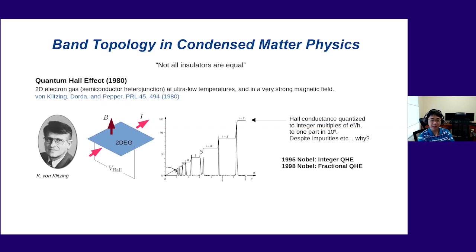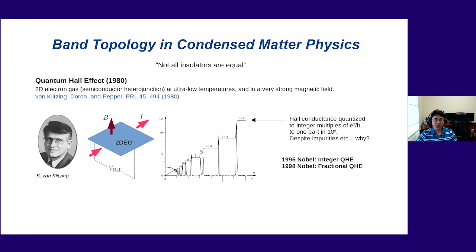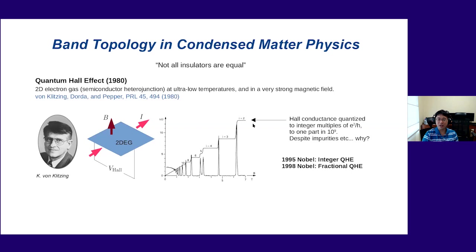Between the p and n layers of a heterojunction you can create a region where electrons flow within a two-dimensional plane. Von Klitzing was studying this two-dimensional electron gas at extremely low temperatures close to absolute zero and in a very strong magnetic field. In this configuration you apply a perpendicular magnetic field, pass a current, and measure the transverse — so-called Hall voltage. What he found was amazing: the Hall resistance exhibits plateaus, and the Hall conductance — one over the Hall resistance — is quantized to integer multiples of e²/h.